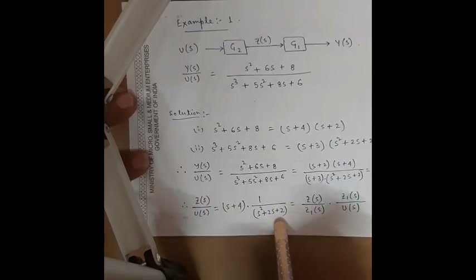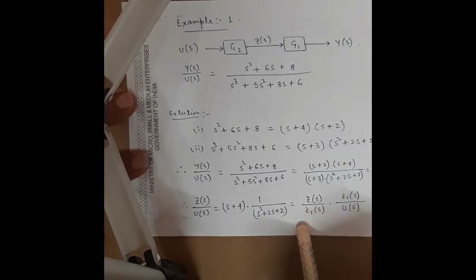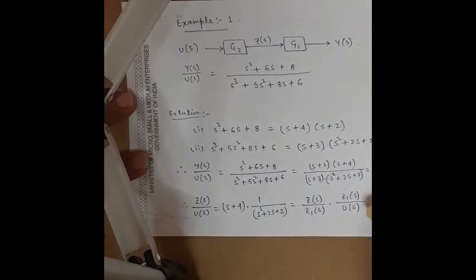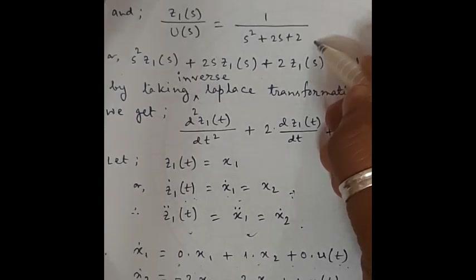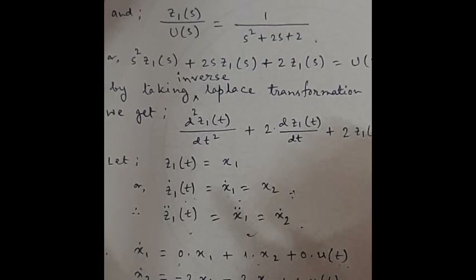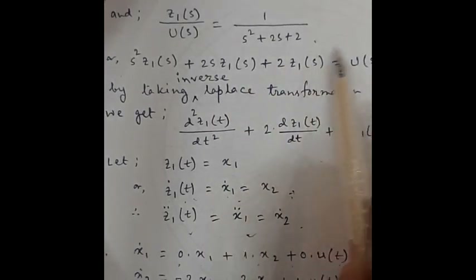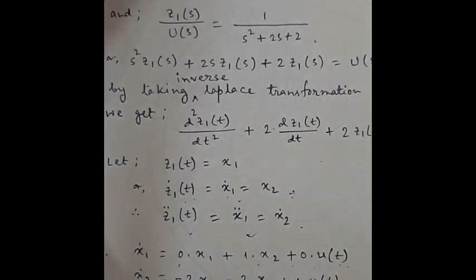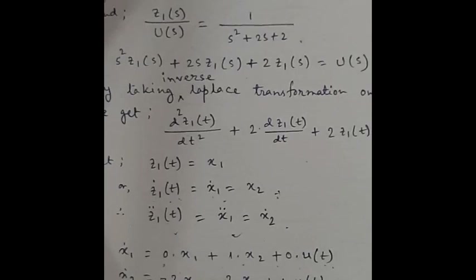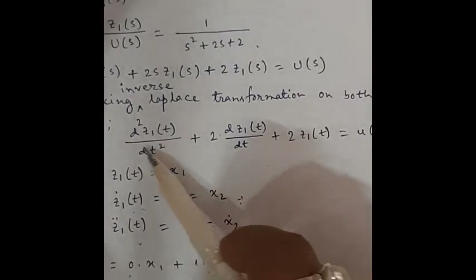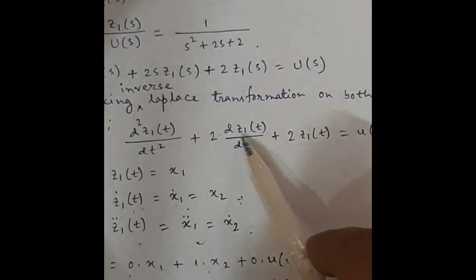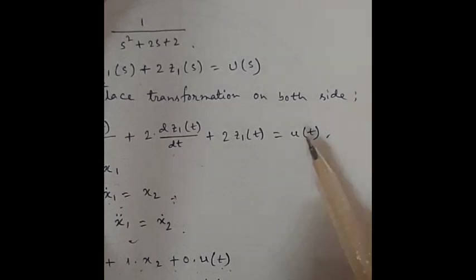We can identify Z(s)/Z1(s) = (s + 4) and Z1(s)/U(s) = 1 / (s² + 2s + 2). For Z1(s)/U(s), taking cross multiplication gives: s²·Z1(s) + 2s·Z1(s) + 2·Z1(s) = U(s). Taking the inverse Laplace transform on both sides gives the differential equation: d²z1(t)/dt² + 2·dz1(t)/dt + 2·z1(t) = u(t).